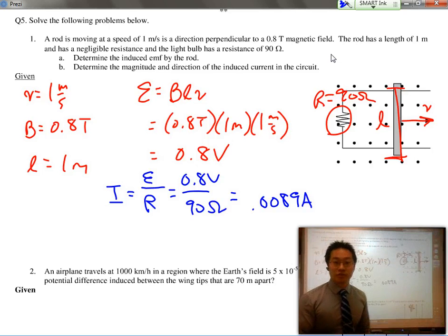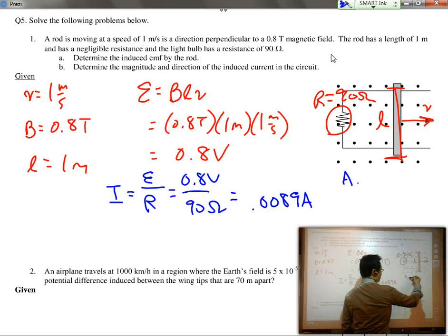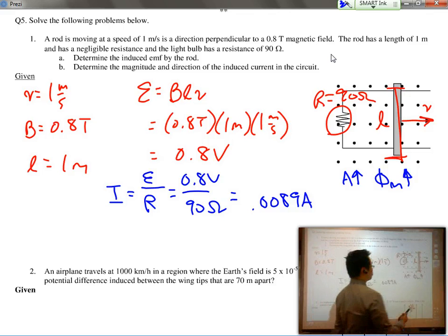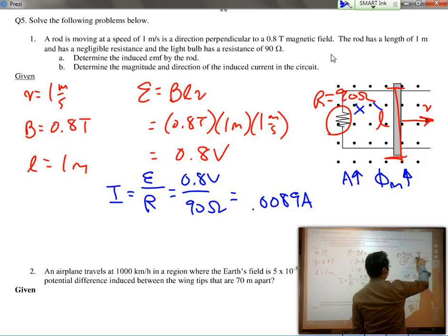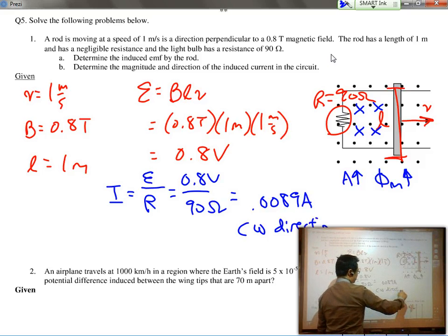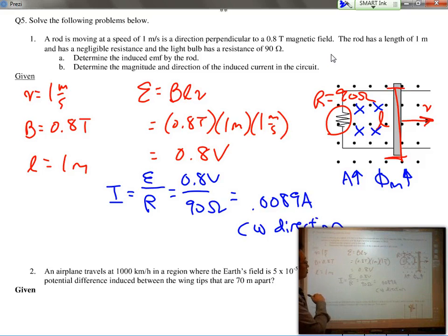But, what's the direction of the current? Well, in this case, we know that the area is increasing. So, the flux is increasing. Which means that the loop will try to weaken the strengthening magnetic flux by creating its own magnetic field in the opposite direction. Which means that, overall, I can see using my hand rule, it's going to be in a clockwise direction.